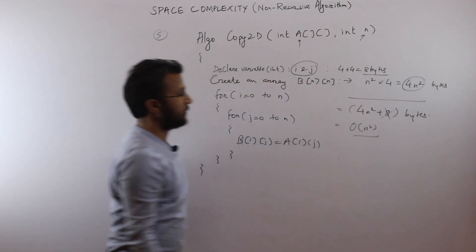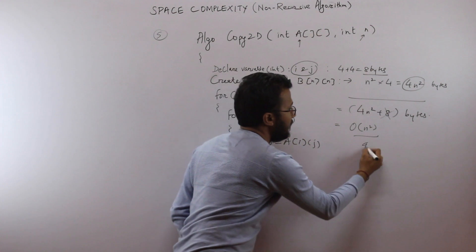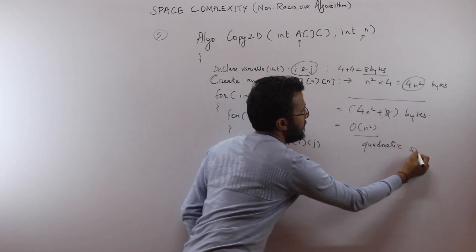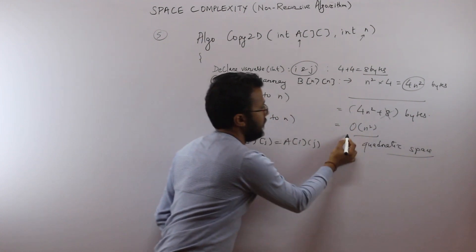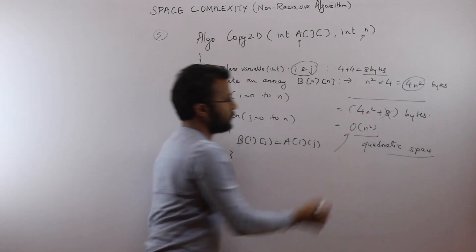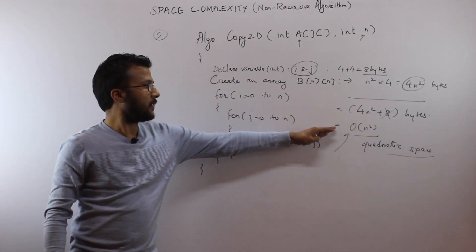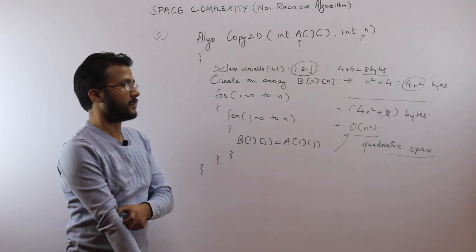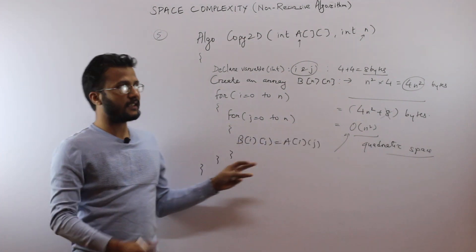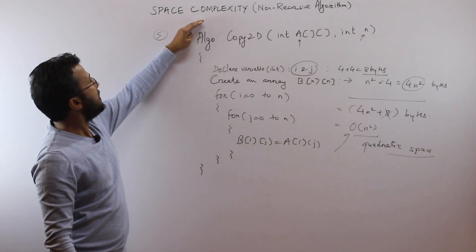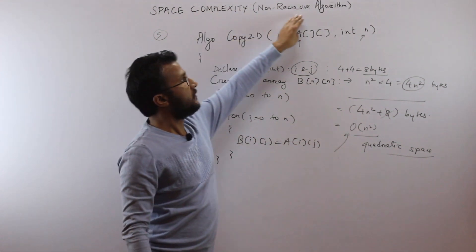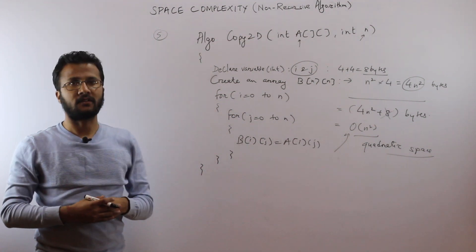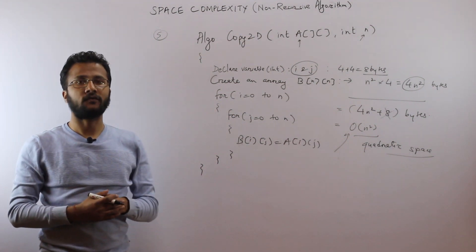This function has a quadratic space requirement — O(n²). Do not worry about asymptotic notations; we will discuss them in detail in our subsequent lectures. This is it for finding the space complexity for non-recursive algorithms. If you have any doubts you can post them as a comment. Thank you for watching.